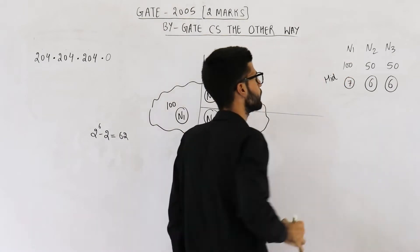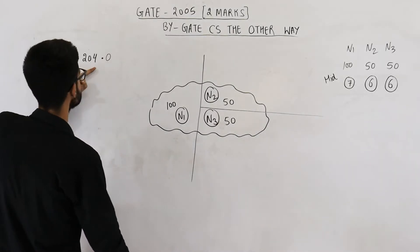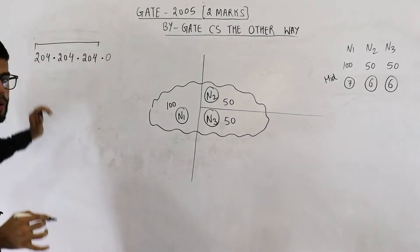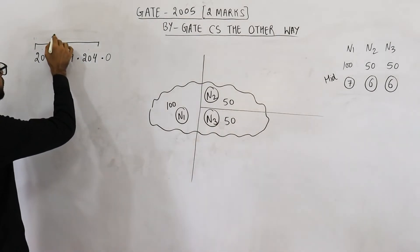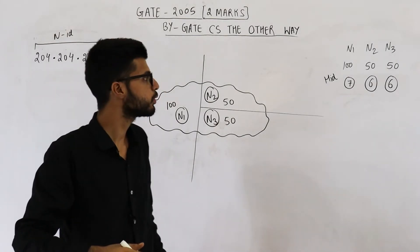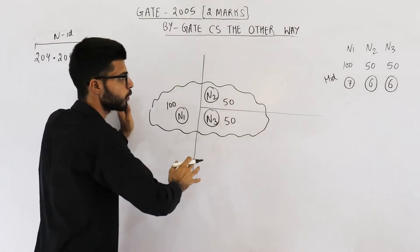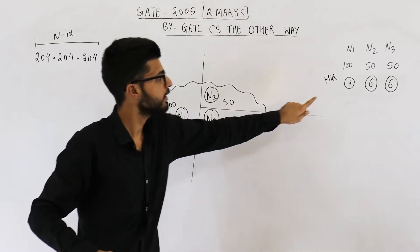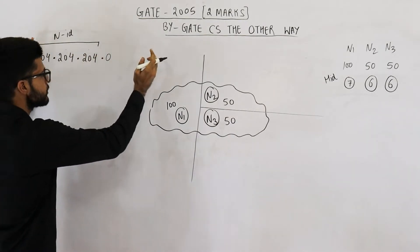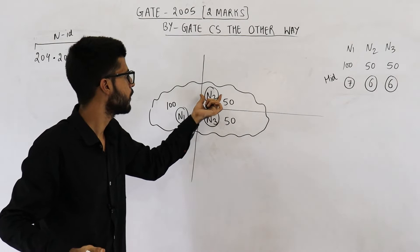The given address is a class C address, meaning the first 3 octets or first 24 bits are the network ID, and the last 8 bits are the host ID. To subnet it, after using those 24 bits to identify the entire network, we need additional bits to identify N1, N2, and N3. So some bits will be borrowed from the host ID, effectively extending the network ID.